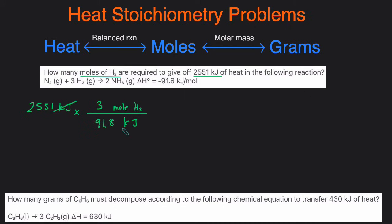When we do that, the kilojoules cancel out. We enter this into the calculator: 2,551 multiplied by 3, divided by 91.8. Our final answer is 83.3 moles of H2 to four sig figs. That's the answer for the second question.